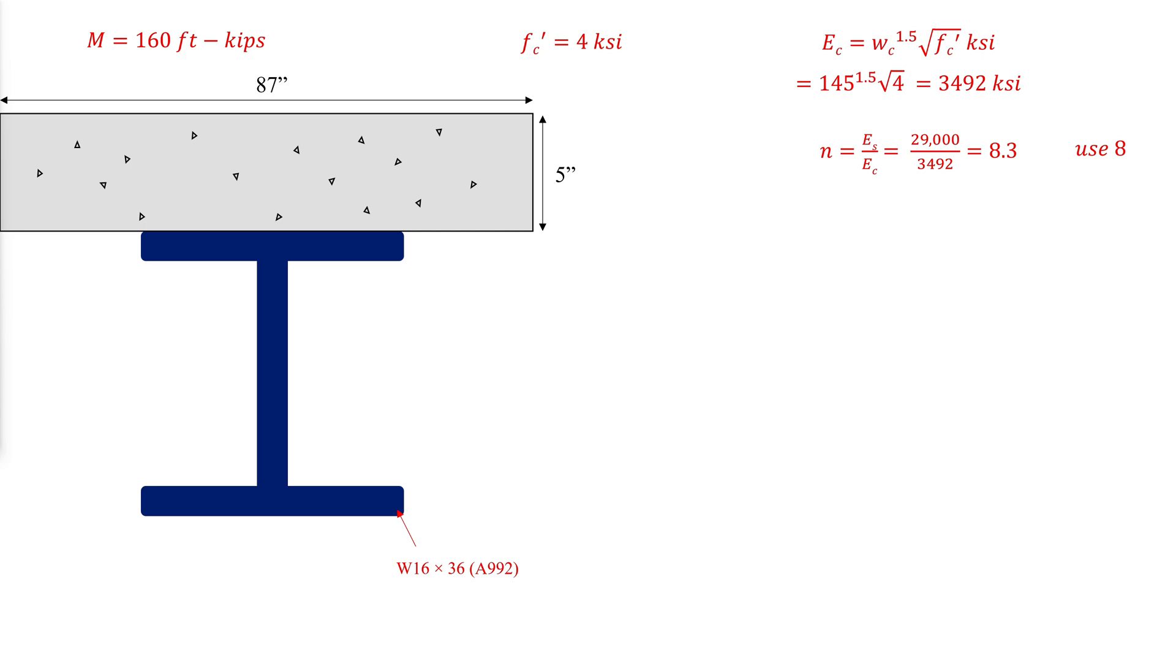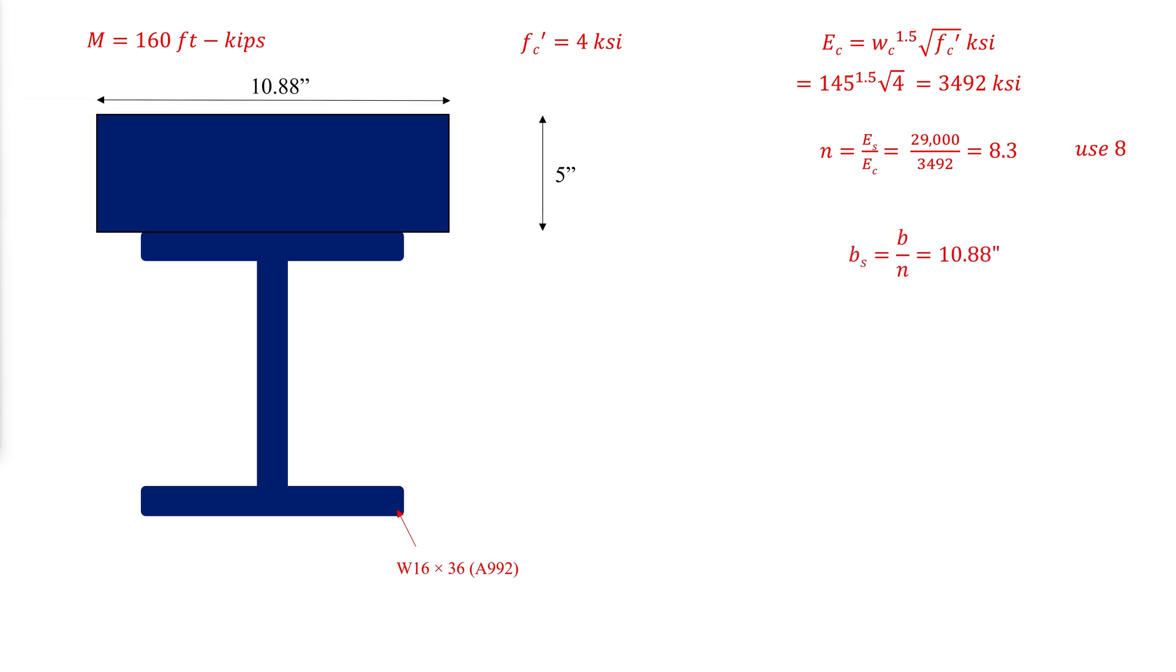The position of the neutral axis is initially unknown. As a starting location, we guess it to be below the top of the steel.